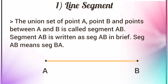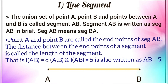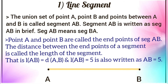A line segment is written as seg AB or seg BA — both can be used. Point A and point B are called the endpoints of seg AB. The distance between the endpoints of a segment is called the length of the segment. So length AB equals the distance between point A and point B. If length AB equals 5, we can also write it as AB equals 5.